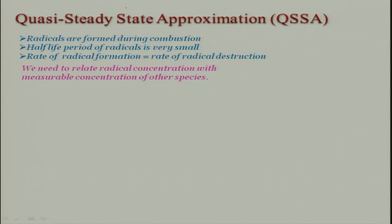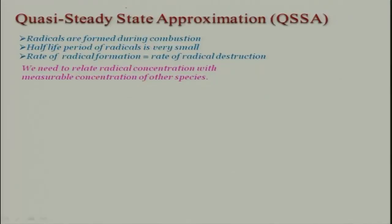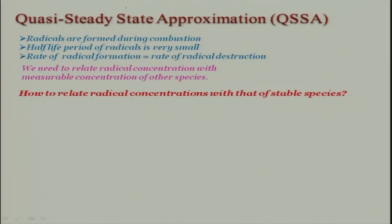We need to relate the radical concentration with the measurable concentration of other species, because you cannot easily measure radicals. People are devising very sophisticated instruments, but it is still difficult because the timescales will be in the order of femtoseconds — not microseconds or nanoseconds. So the basic idea of this analysis is to relate radical concentration in terms of stable species concentration, which you can measure.